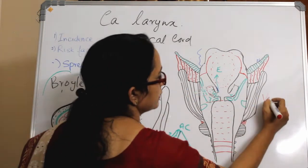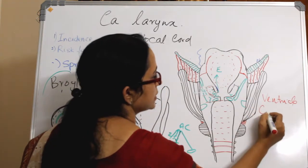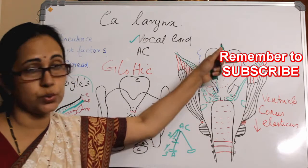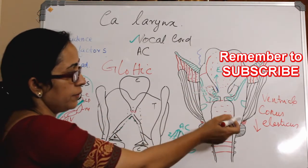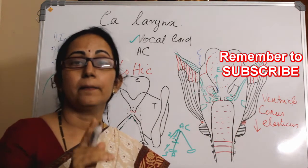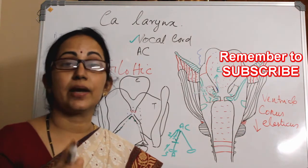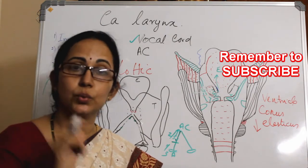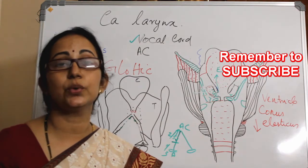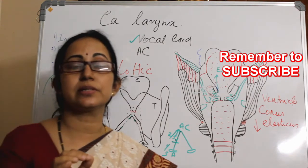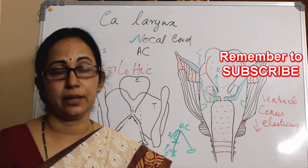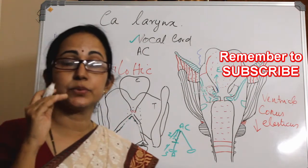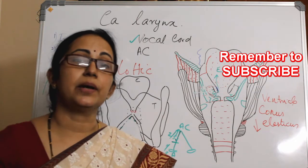Superiorly the barrier is the ventricle and inferiorly it is the conus elasticus. Inferior spread is commoner than superior spread. If the conus elasticus is breached — it is a very tough membrane — there are points of weakness where the neurovascular bundle enters and exits the larynx. At those points there are areas of weakness through which malignancy can spread downward to the subglottis. This inferior spread to the subglottis is an important criterion for open partial laryngectomy. The cutoff limit is subglottic spread of 10 mm anteriorly and 5 mm posteriorly, up to the upper border of the cricoid cartilage.